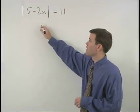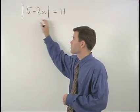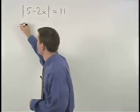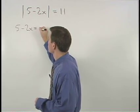Our first equation will look exactly like the original except for the absolute value signs. So we have 5 minus 2x equals 11.